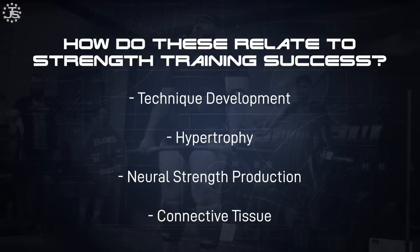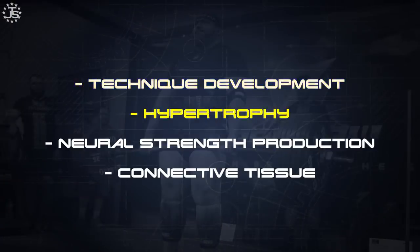How do directed adaptation and adaptive resistance relate to strength training and powerlifting success? There are four main categories where these two concepts really come into play. First is the development of technique. Second is hypertrophy — as you do more and more volume, that volume becomes less and less impactful on muscle growth. Third is neural strength production, which benefits from directed adaptation but runs into adaptive resistance with too much. Finally, connective tissue — if you always do the same thing over and over, you run into overuse injuries, which is connective tissue's response to adaptive resistance.